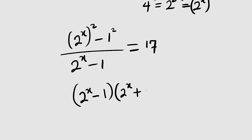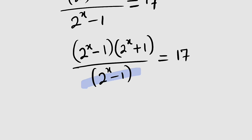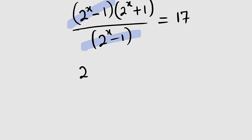You add 1 without the power, and you divide. We have 2 to the power of x minus 1, and to the right-hand side we still have 17. Observe that we have 2 to the power of x minus 1 in both numerator and denominator, so they will cancel. What we have left is just 2 to the power of x plus 1 on the left-hand side, equal to 17.